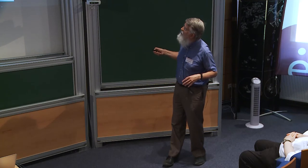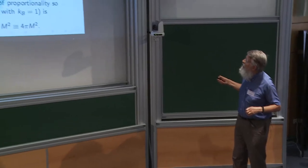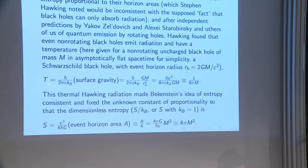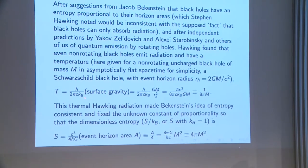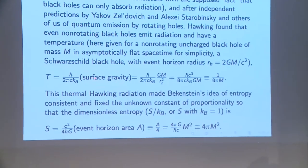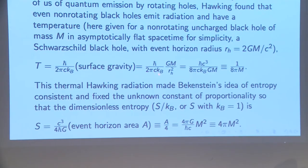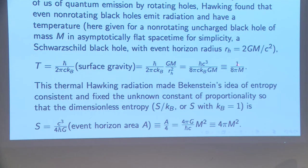For a non-rotating uncharged Schwarzschild black hole with event horizon radius r, the Hawking temperature in four dimensions is related to the surface gravity, and in Planck units it's one over 8π times the mass. This thermal Hawking radiation made Bekenstein's entropy idea consistent. It fixed the unknown constant of proportionality, so the dimensionless entropy — entropy divided by Boltzmann's constant — is given in Planck units as one quarter of the horizon area, or for a Schwarzschild black hole, 4π M squared.